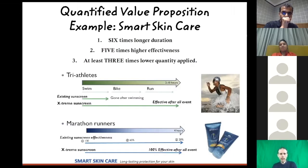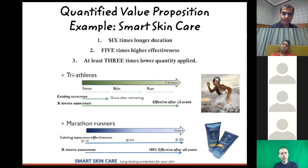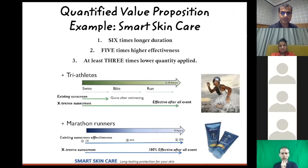Here is another example: smart skincare. This is quite clear in terms of quantified value propositions. We have an extreme sun cream where, for a triathlon elite event, the alternative — existing sun cream — has gone to reduced action after a swim, whereas the extreme sun cream is effective for the whole event. For marathon runners, which is another segment, the regular sun cream reduces in effectiveness, while the extreme sun cream remains effective after the whole event. You're again showing the before and after. If you think about the priorities of the extreme sports person, time is a big thing — they don't want to be wasting time applying sun cream again after a swim or mid-marathon run. This proposition has longer duration, higher effectiveness, and you have to apply it less.